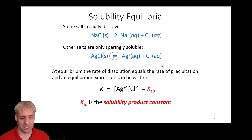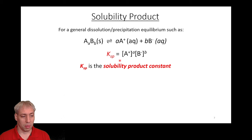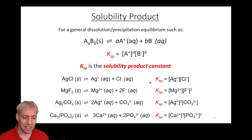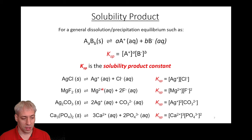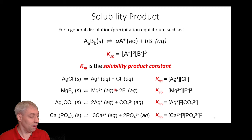The general form holds true: some ions A and B are formed from a solid, giving us products to stoichiometry over reactants, where the solid reactant doesn't appear. For AgCl we get Ag+ and Cl-; for MgF2 we get one Mg2+ and two F- ions. From these we write the Ksp expression directly: Ag+ to the first times Cl- to the first for AgCl, and Mg2+ to the first times F- to the second for MgF2 — same rules as chapter 13, applied to a solubility product.